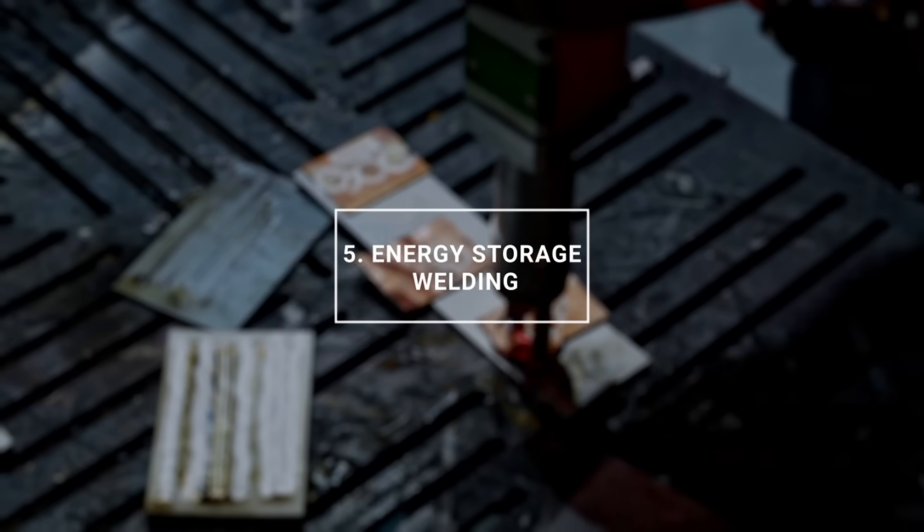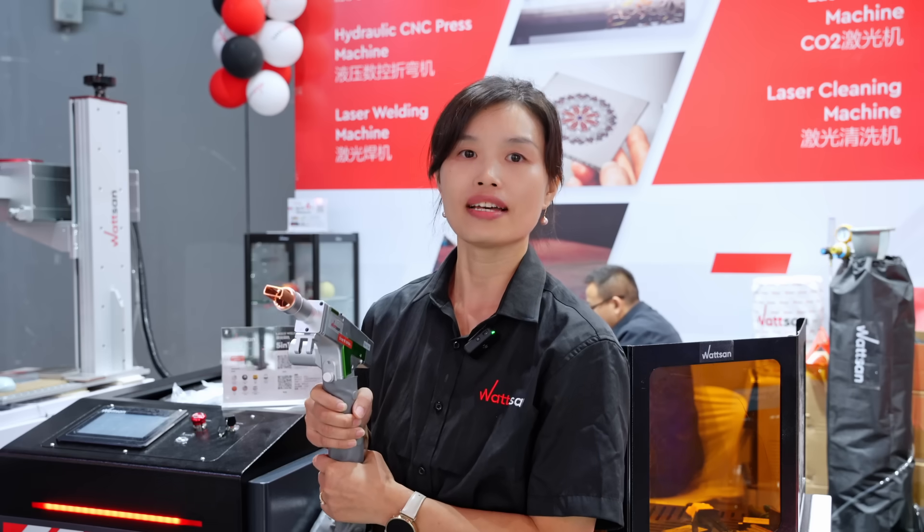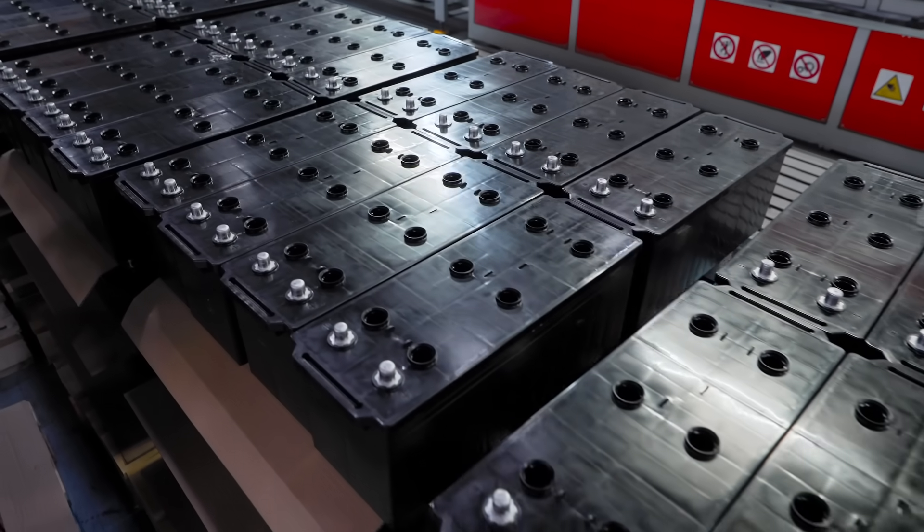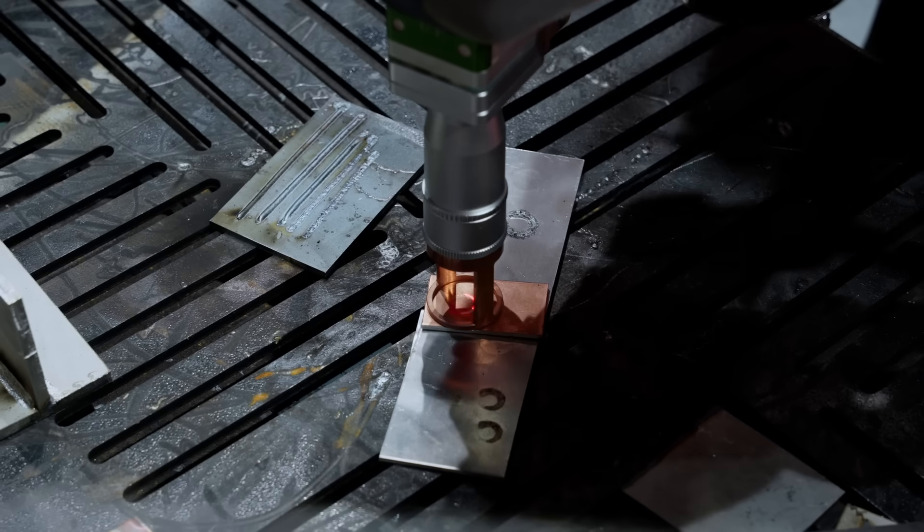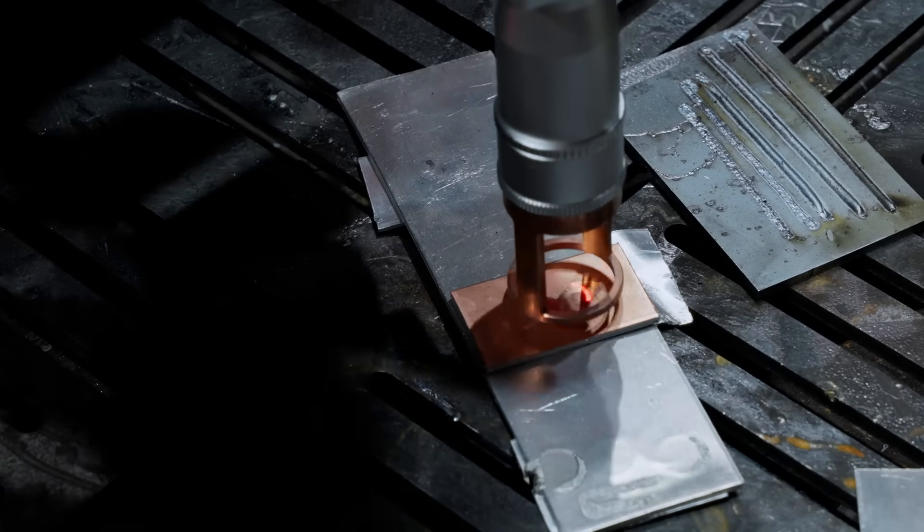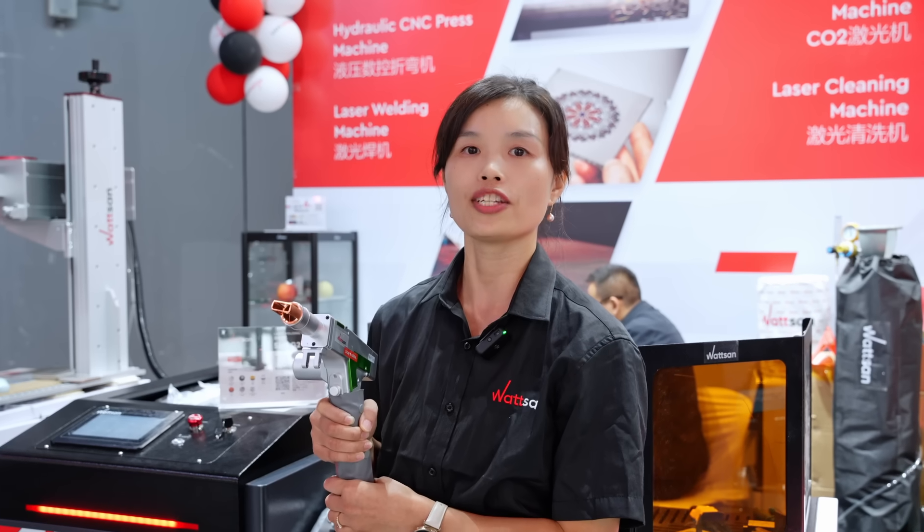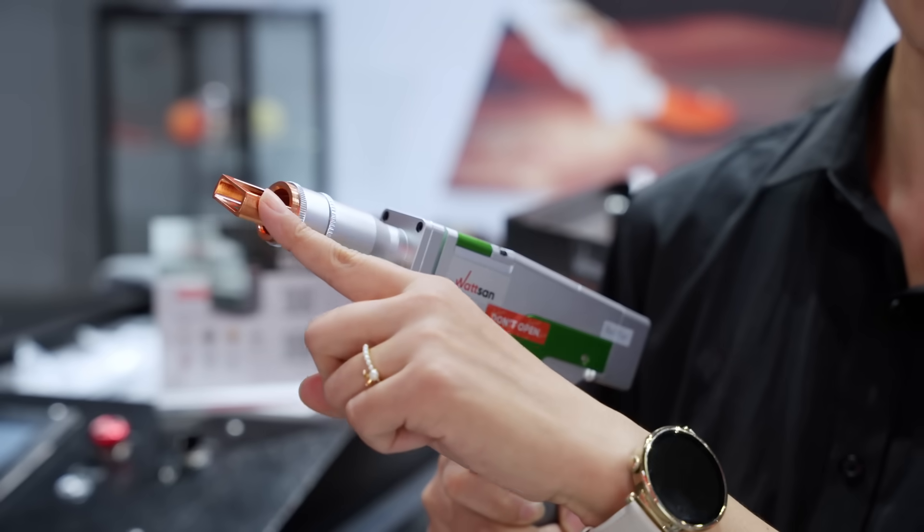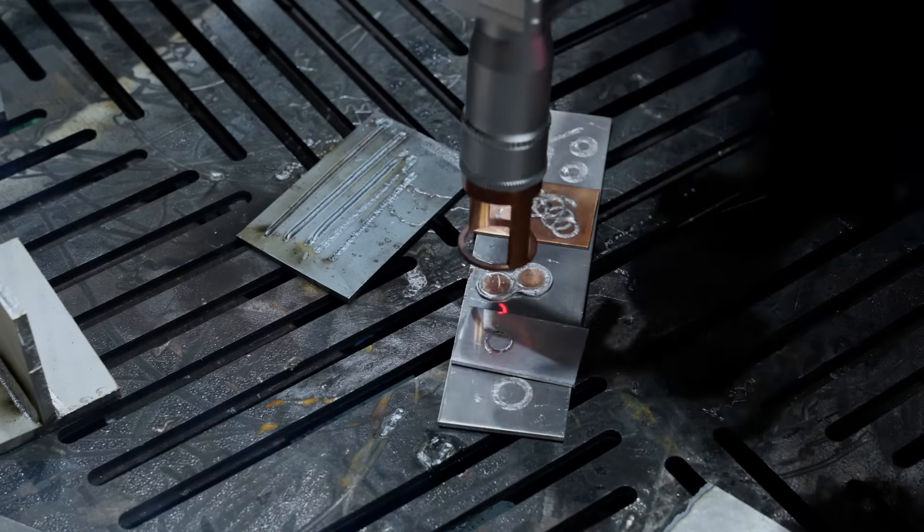Fifth, energy storage welding. Here's another special function. It lets you weld battery terminals to contacts without overheating. And don't worry, no one will get hurt. To start energy storage welding, just change the nozzle. You can do welding and riveting with this setup.